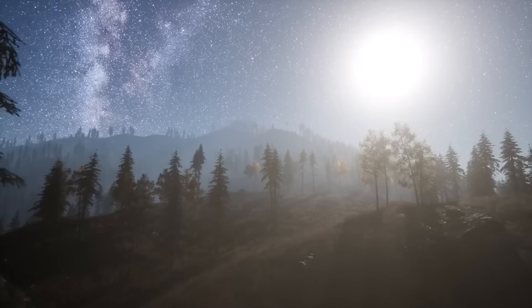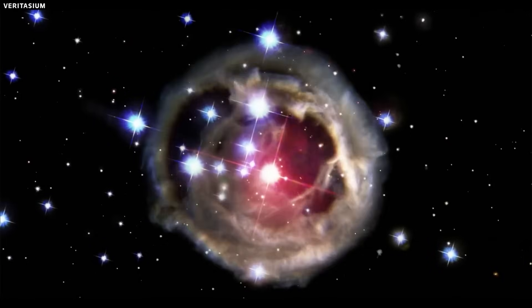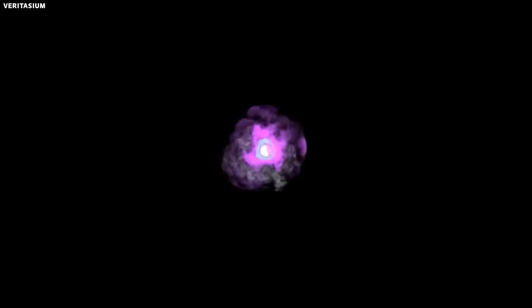This blinding display would last for weeks, forever changing our perception of the constellation Orion. Following months would see this luminosity fade, and after decades, an outer shell of the once-vibrant star would present itself as a planetary nebula surrounding the dim remnants of its core.